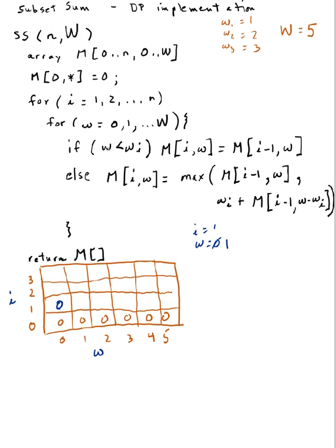Then I increment w to 1, and I ask: is 1 less than w sub 1? The answer is no, they are equal. So I need to compute m[1][1] by choosing the max between these two things. That's the max of m[0][1], which is 0, or w1 which is 1 plus m[0][w minus 1], so 1 minus 1 gives us m[0][0] which is 0. So 1 plus 0 gives 1, and the max is 1, assigned to m[1][1].